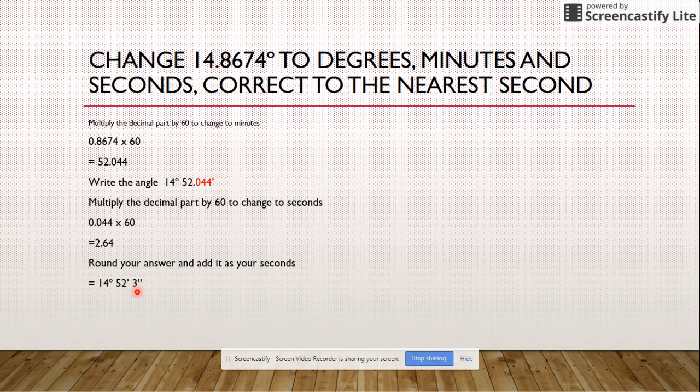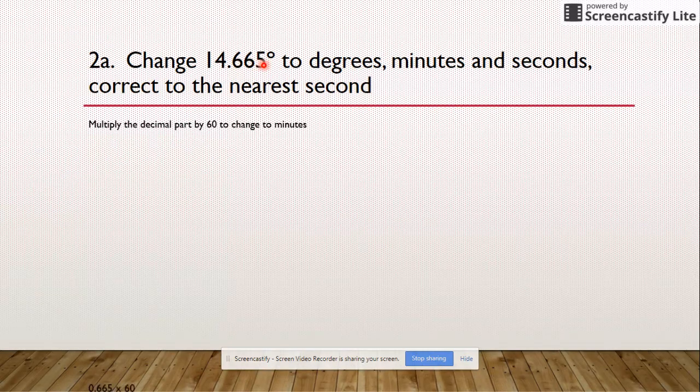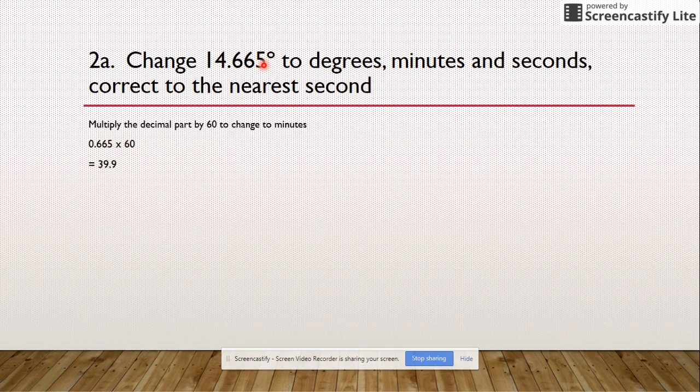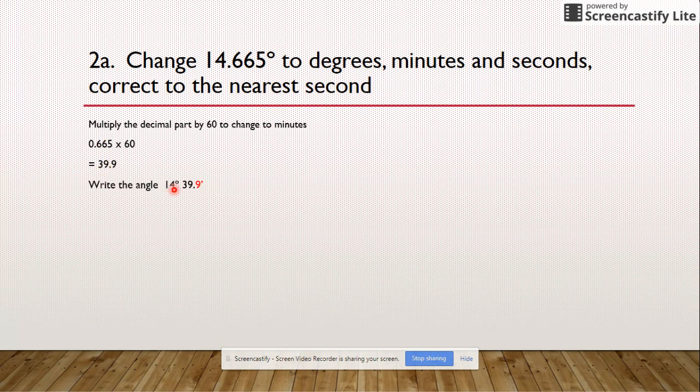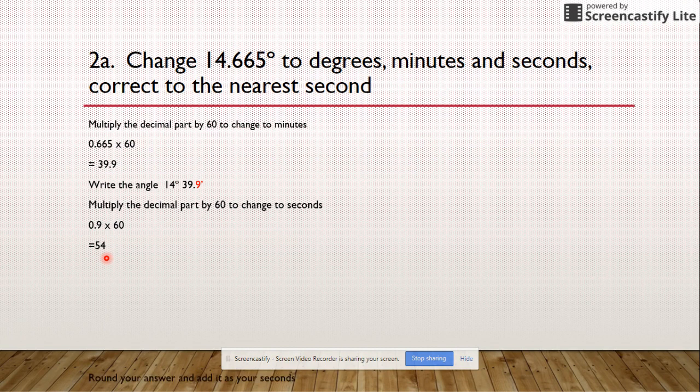Let's see if you can do this again. Do it with me. Multiply the decimal part by 60, so 0.665 times 60, that will give you 39.9. So now we know that our next section is 39. It's going to look like this: 14 degrees 39.9. Now we take our decimal part, 0.9 times 60, and that gives us 54. We don't need to round that up, so now we've got 14 degrees 39 minutes and 54 seconds.